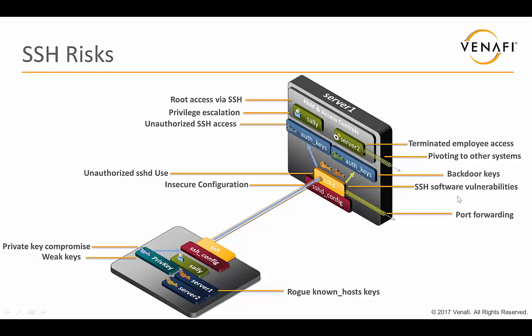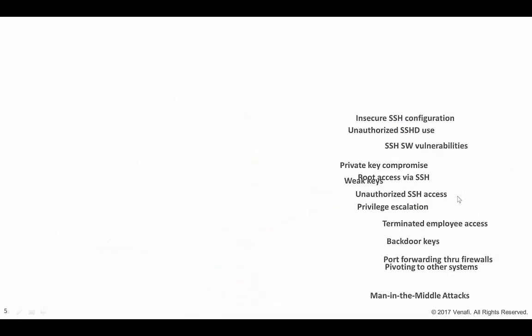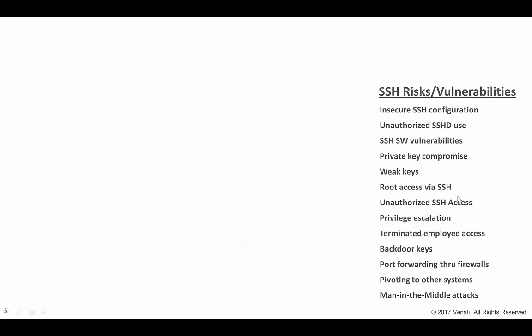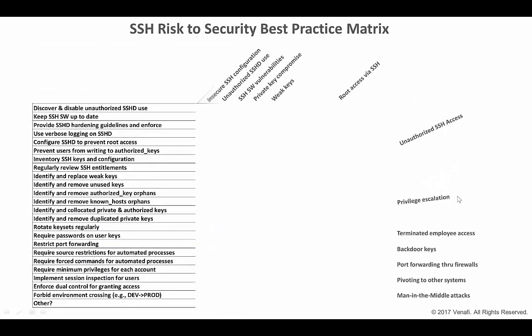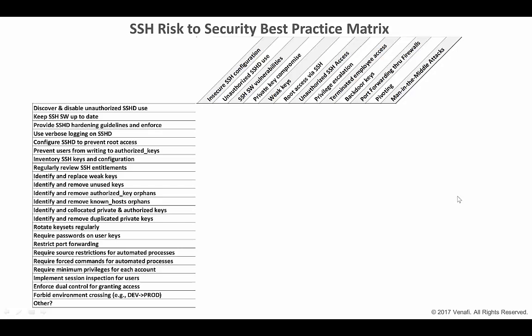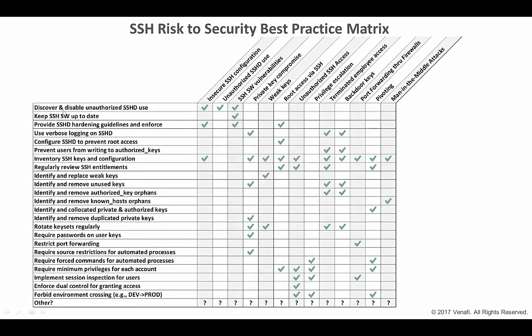With all of these risks it's a lot to take in. If we put them all in a list and then juxtapose them with the corresponding best practices, it's an even longer list. One idea for making both the risks and best practices consumable is to create a matrix — placing all risks across the top and all best practices on the left — so you can map which best practice addresses which risks, and vice versa.